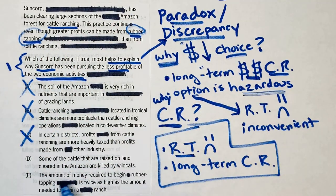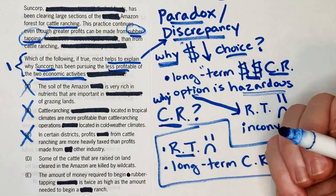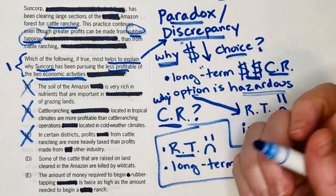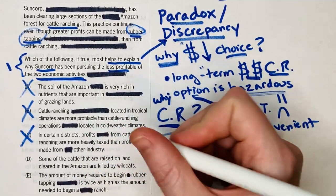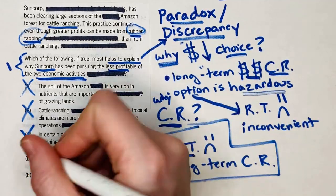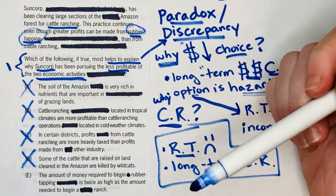Answer D says some of the cattle raised on land cleared in the Amazon are killed by wildcats. That's very sad for the cattle, but it doesn't relate at all to the argument.